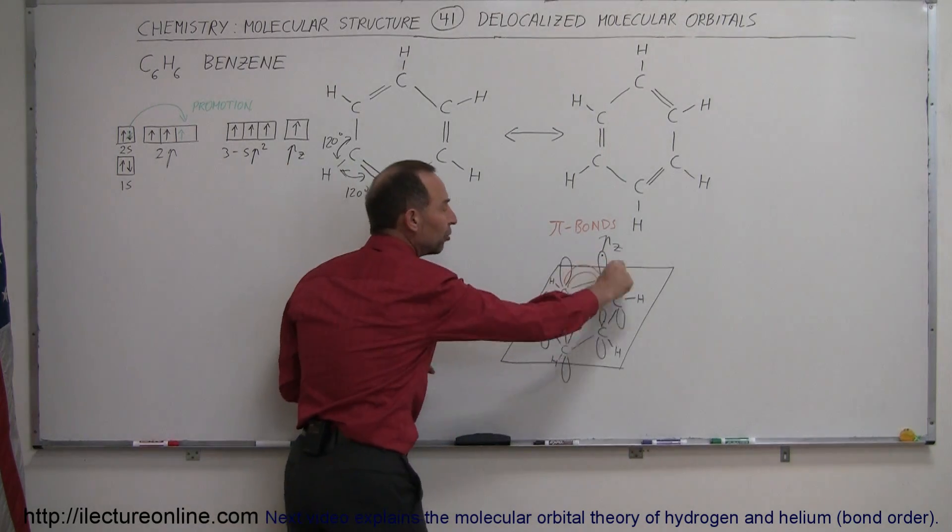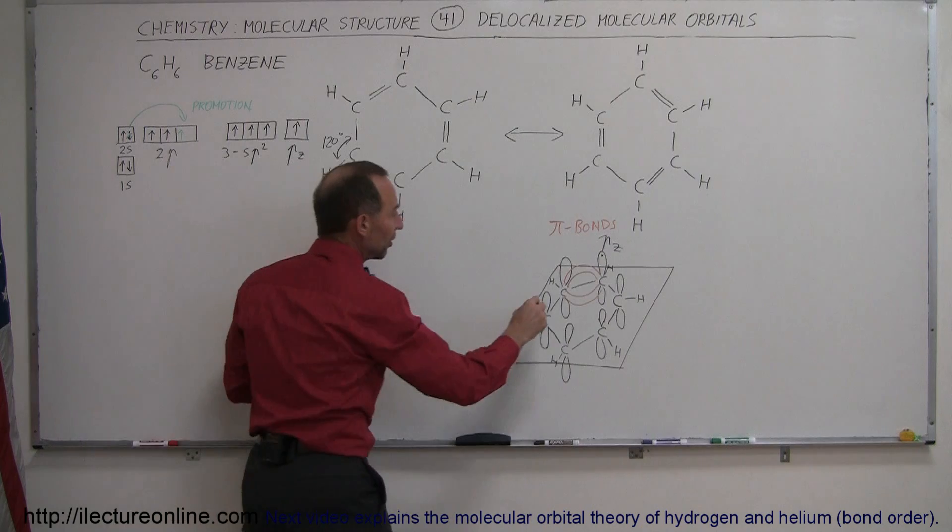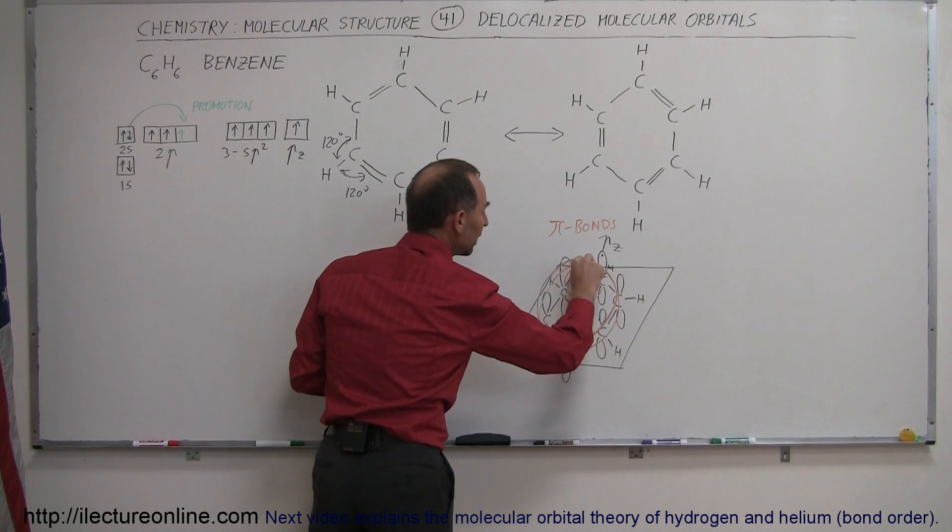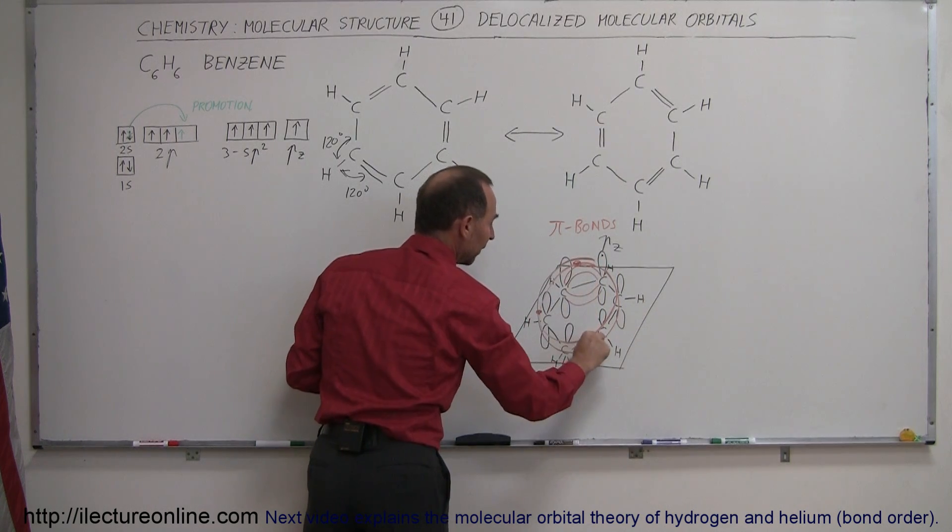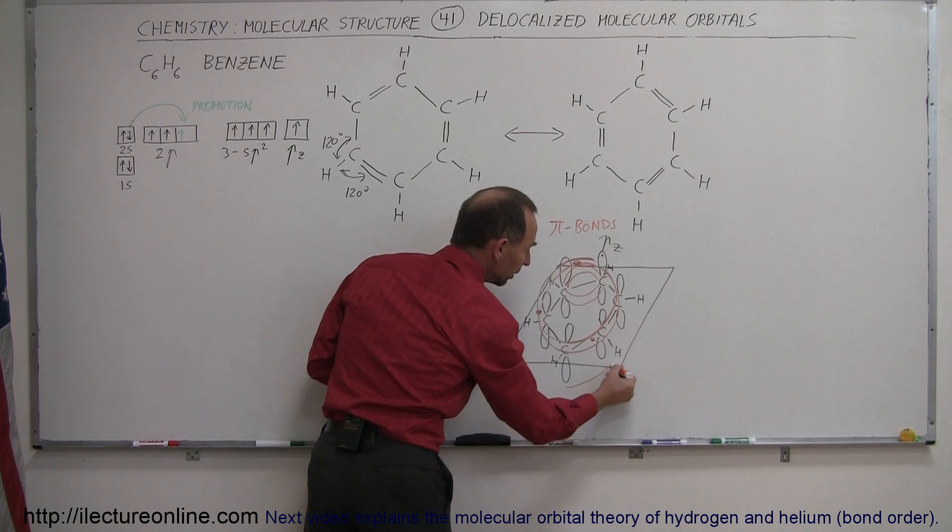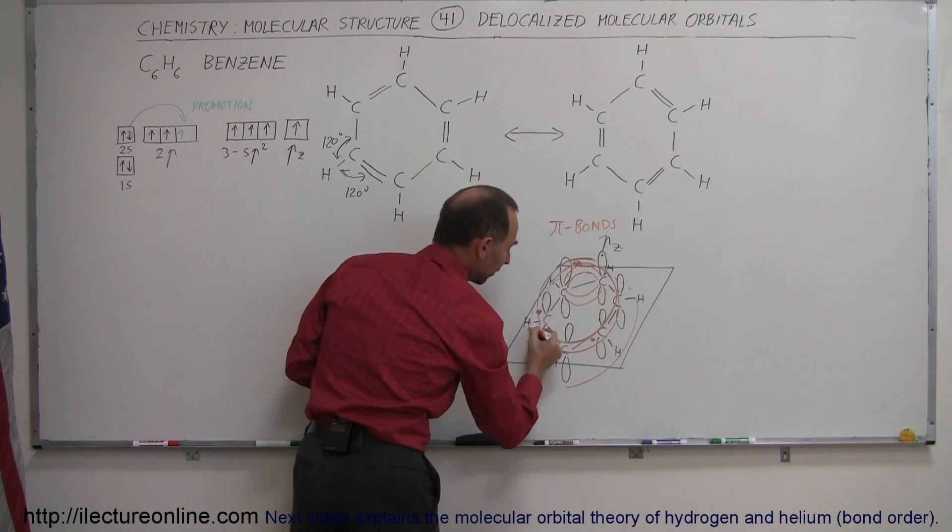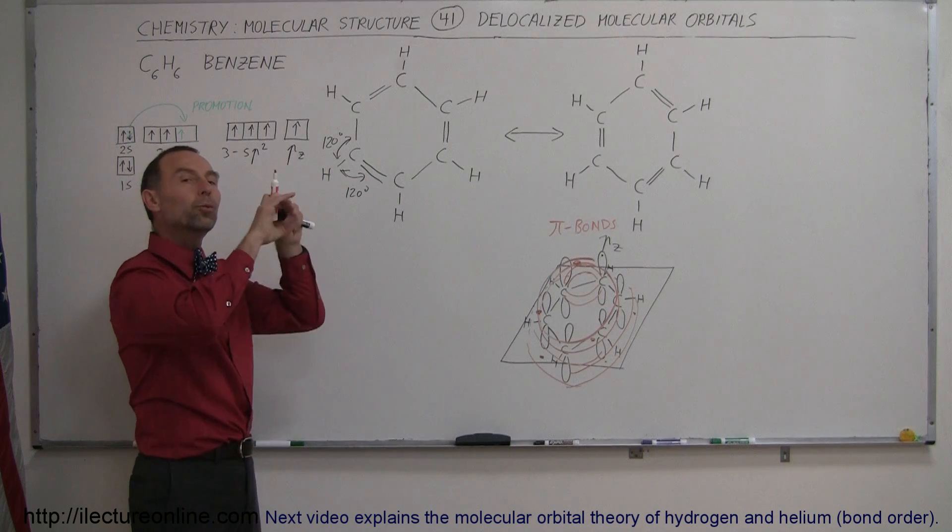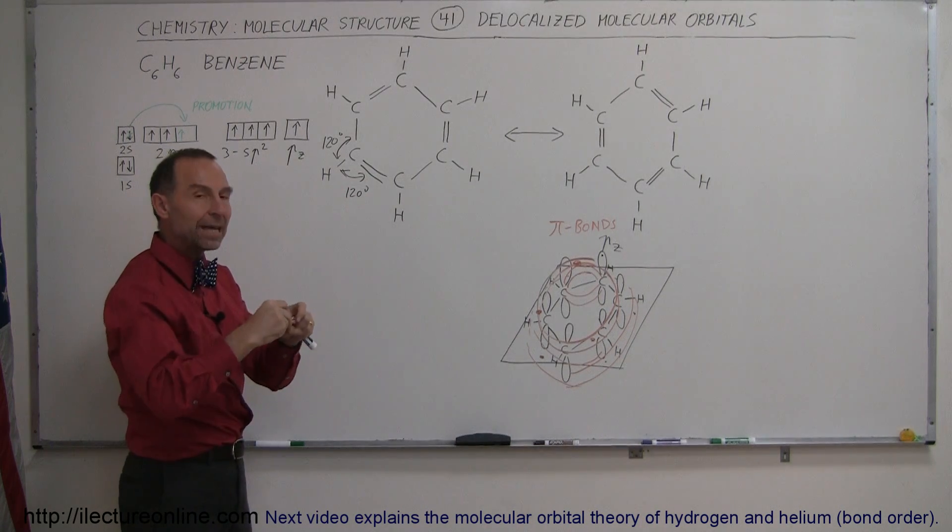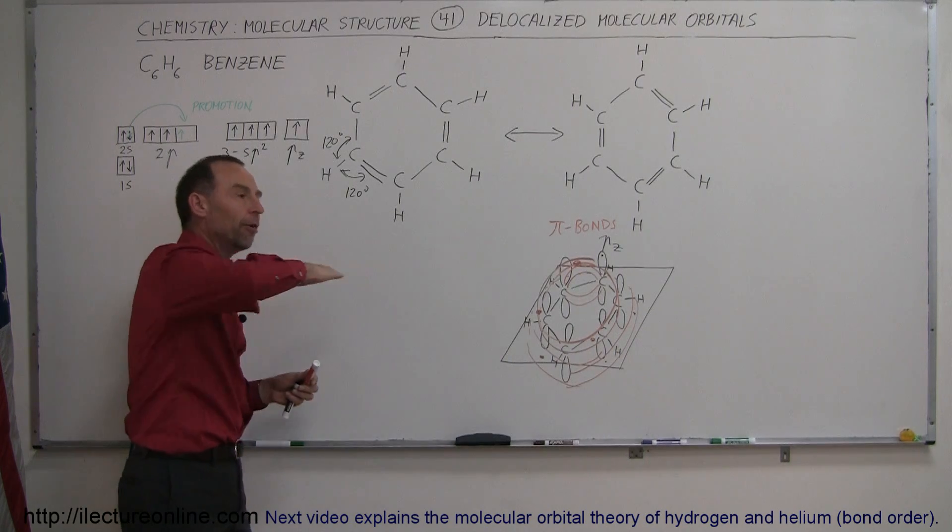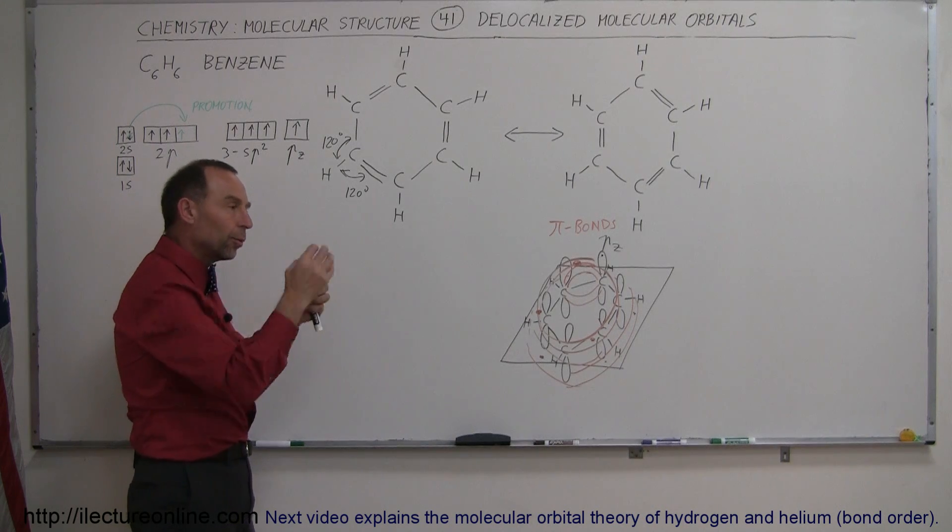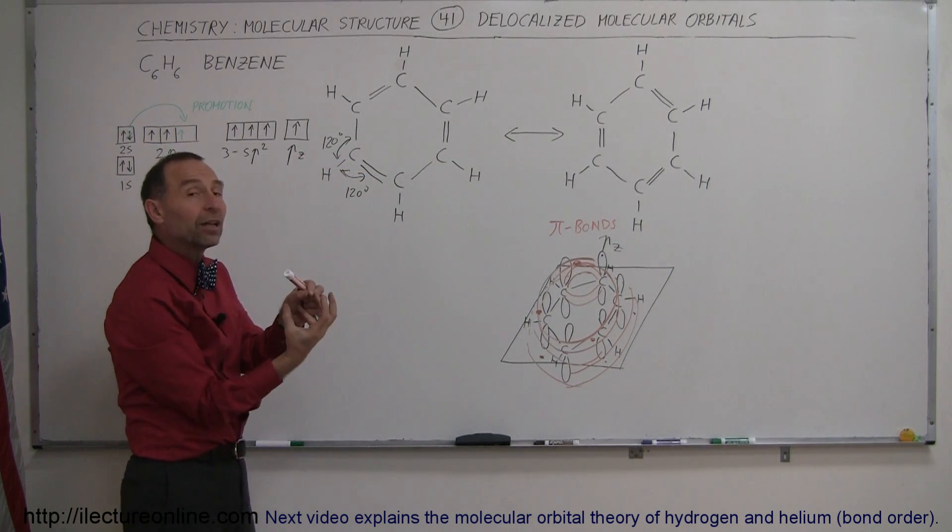So instead of forming these little bridges, in essence what will be formed is a continual ring above the carbons in which three electrons can reside. And then another ring below the carbons, where the other three electrons can reside. So we end up with two ring-shaped regions that physically make a unified pi bond above the benzene ring and below the benzene ring. The three electrons will then reside in the above ring and the three electrons will reside in the below ring.